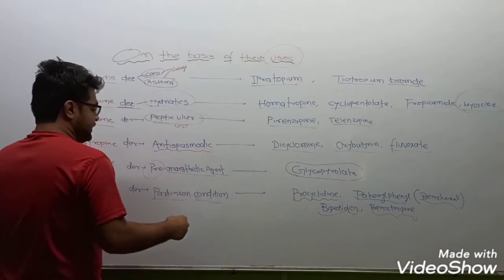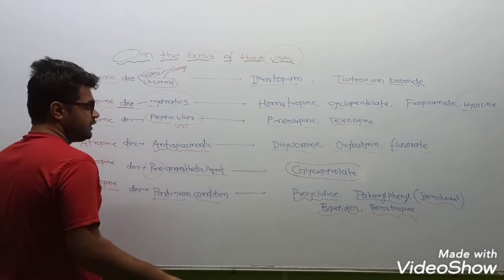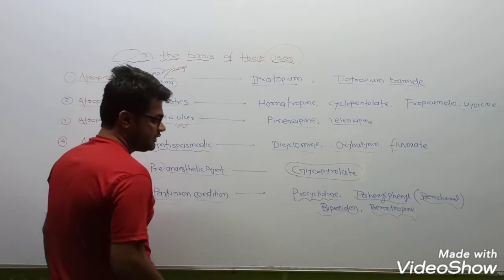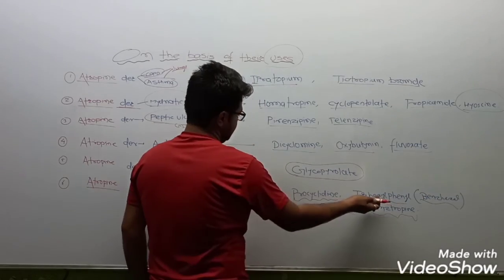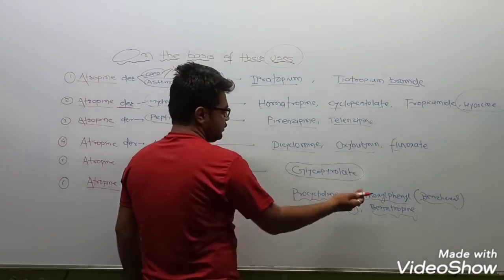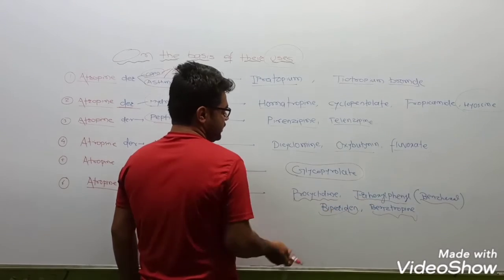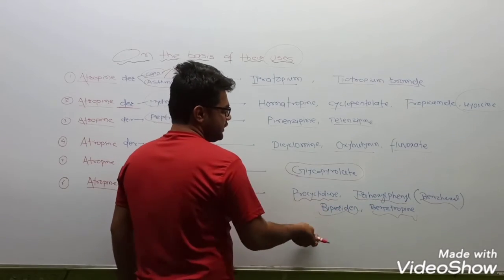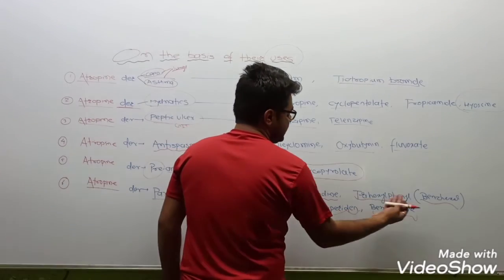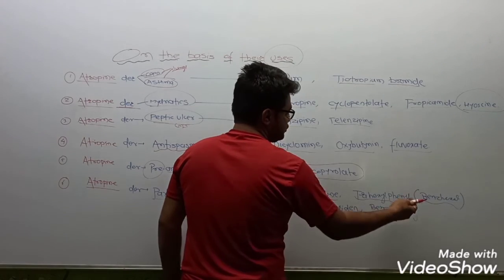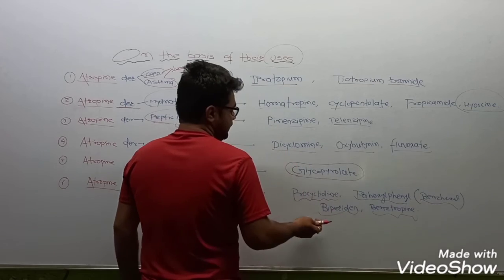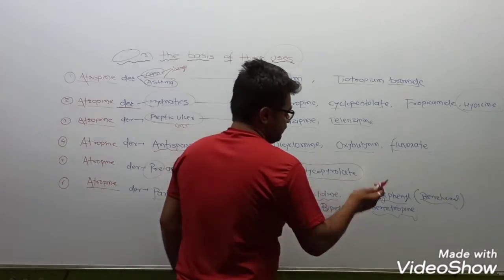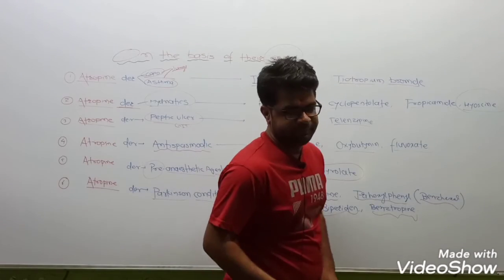For Parkinson's condition, the atropine derivative drugs are: procyclidine, trihexyphenidyl (also called benzhexol), biperiden, and benztropine. Take a note of these drug options for each condition as general information.